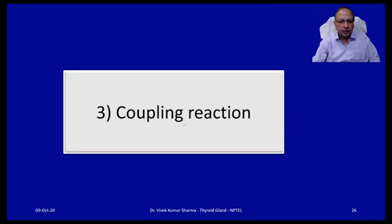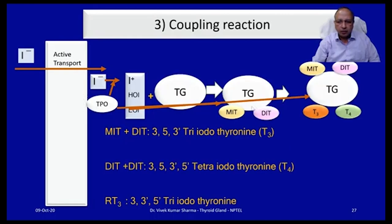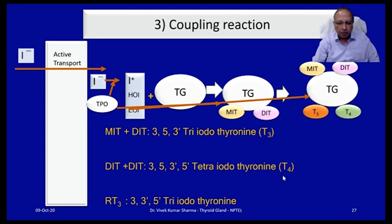The third step is the coupling reaction. MIT and DIT couple together to give rise to T3 and T4 hormones. When one MIT couples with one DIT, it gives rise to 3,5,3'-triiodothyronine (T3). When two DIT molecules combine, they give rise to 3,5,3',5'-tetraiodothyronine (T4). Reverse T3 (RT3) is produced when 3,3',5'-triiodothyronine is formed, but as discussed, it is the inactive form.